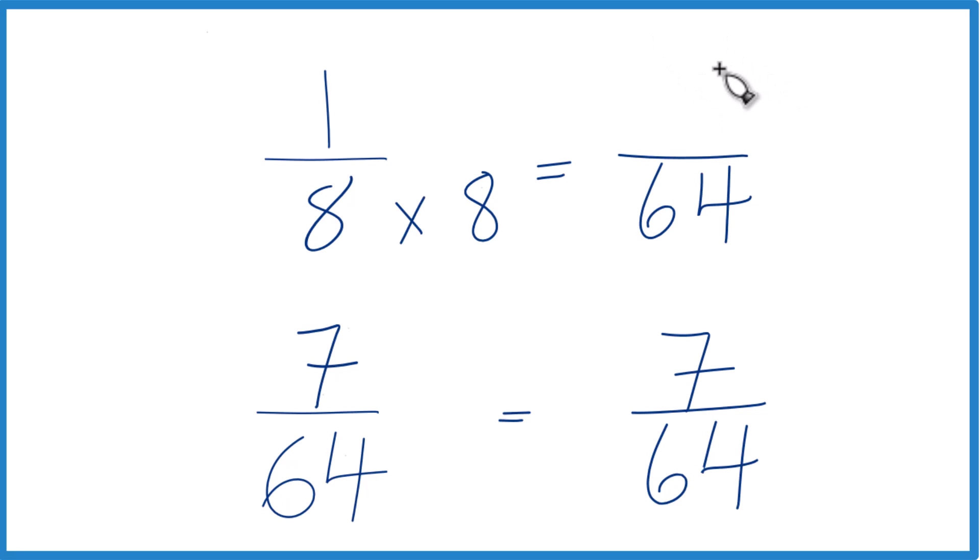Now we could compare the numerators. Since we multiplied the denominator by 8, we do need to multiply the numerator by 8. That's because 8 divided by 8 is 1, so we're just multiplying by 1. We don't change the value, just the way it's written. 1 times 8, that is 8.